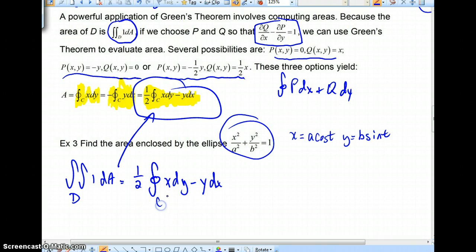So, what we could do is very quickly find that dx/dt would be the derivative of cosine, which is negative A sine T. And then the derivative of Y with respect to T would be, the derivative of sine is cosine, so we'd get B cosine T. We could also say that dx would be negative A sine T dt. We could similarly say that dy is B cosine T dt.